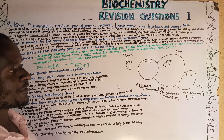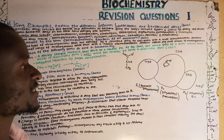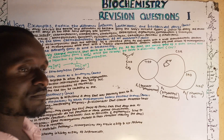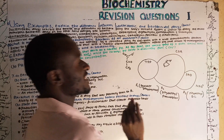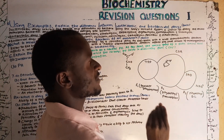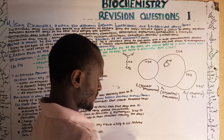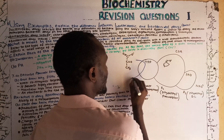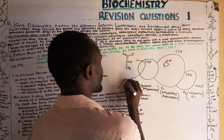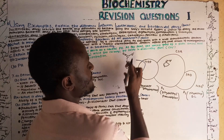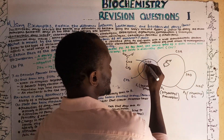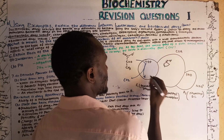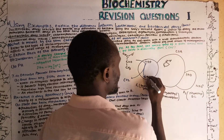TPP — thiamine pyrophosphate — has a five-membered ring, which is the prosthetic group that binds pyruvate. When it binds pyruvate, it kicks off carbon dioxide from pyruvate, and the remaining component of pyruvate stays attached, forming hydroxyethyl-TPP.